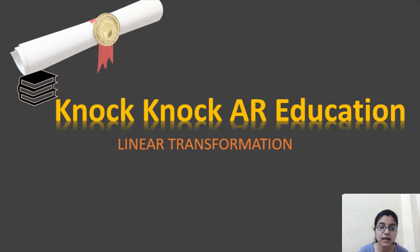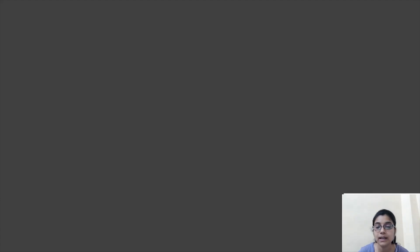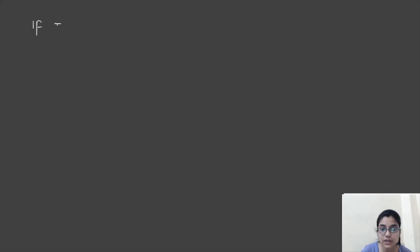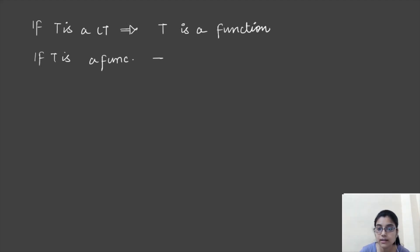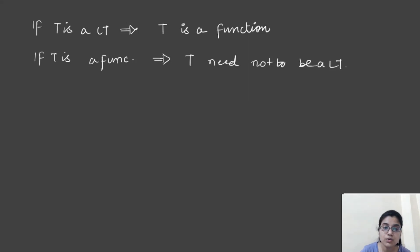In the last class, I asked a question: if T is a linear transformation, then T is a function — but if T is a function, then is T a linear transformation? Is this statement true or not? Very few of you answered, so let me discuss this. If T is a linear transformation, then definitely T is a function. But if T is a function, then T need not be a linear transformation.